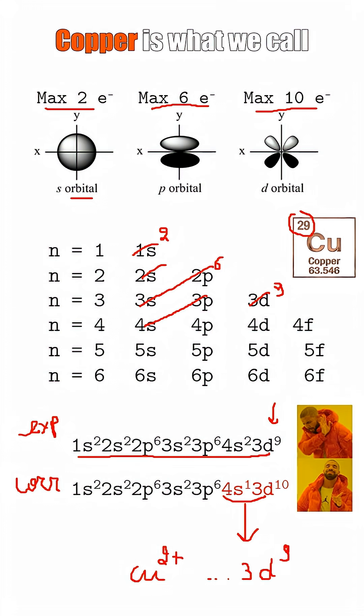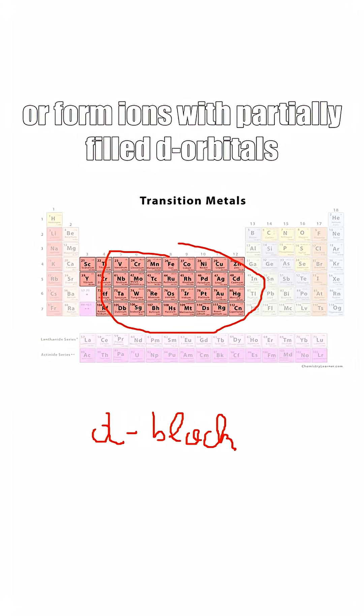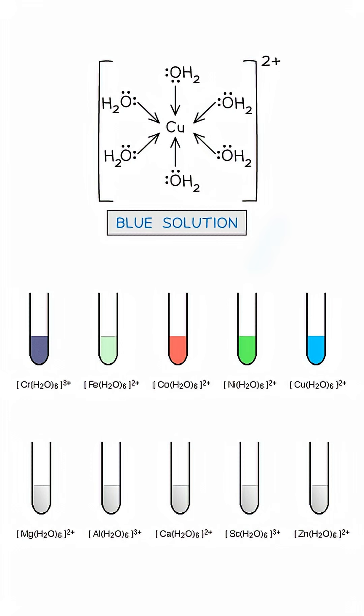Copper is what we call a transition metal. Those elements have a partially filled D orbital or form ions with partially filled D orbitals. In solution, transition metal ions like copper form complexes because they are surrounded by water. All of them are colored, whereas non-transition metal ions are colorless.